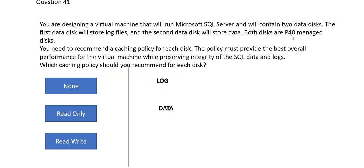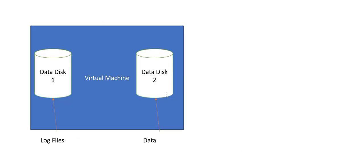These are P40 disks — high performance block storage disks. The keyword here is: you need to recommend a caching policy. For log files, what should be the caching policy, and for data, what should be the caching policy? The virtual machine's logs are kept in data disk 1.